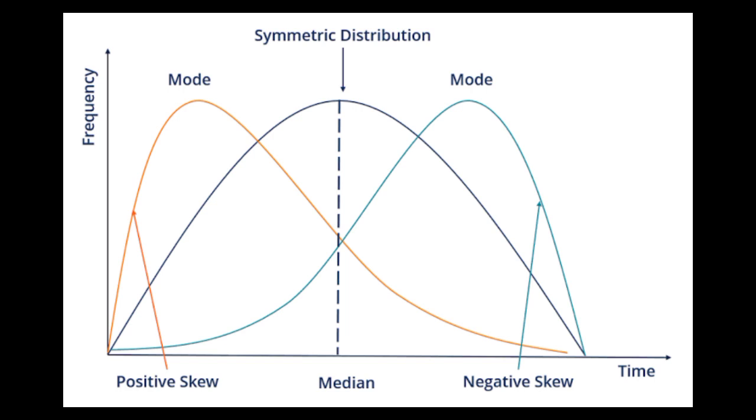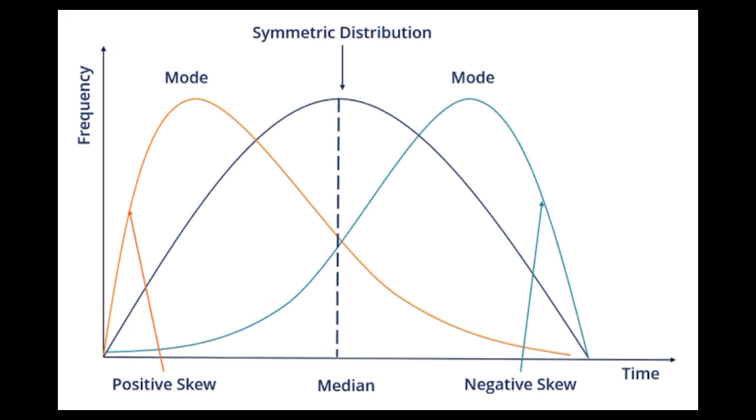When our left side and right side mirror images are not the same, then we call it asymmetrical distribution.